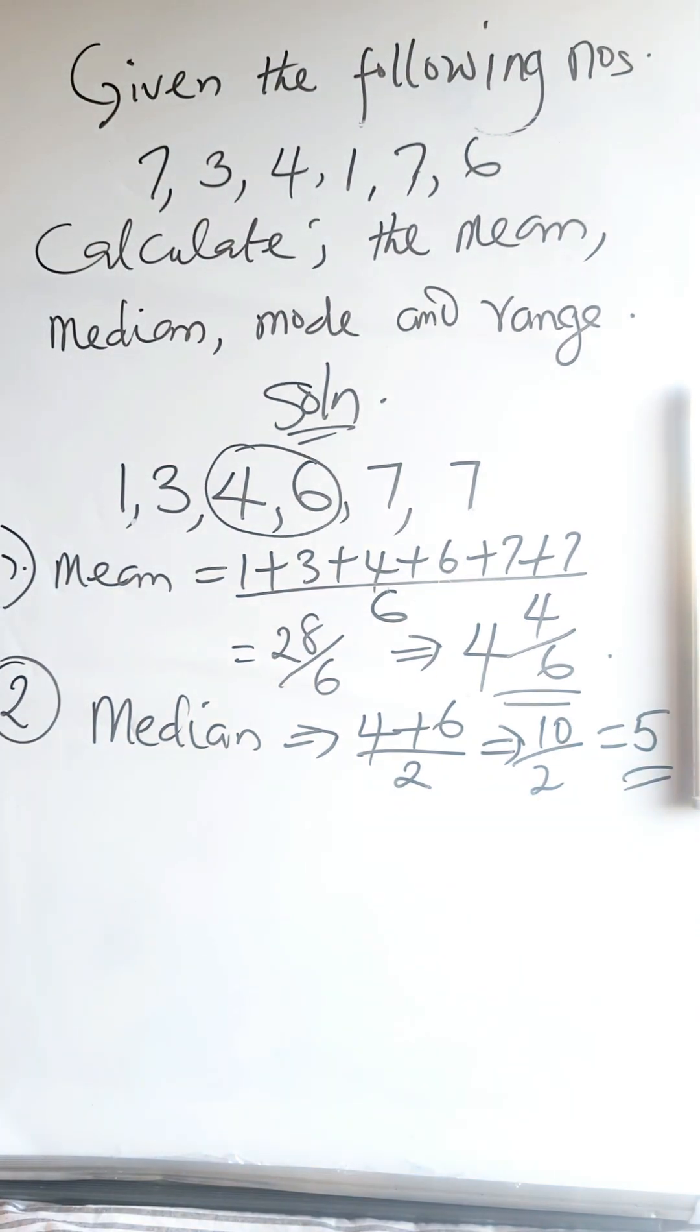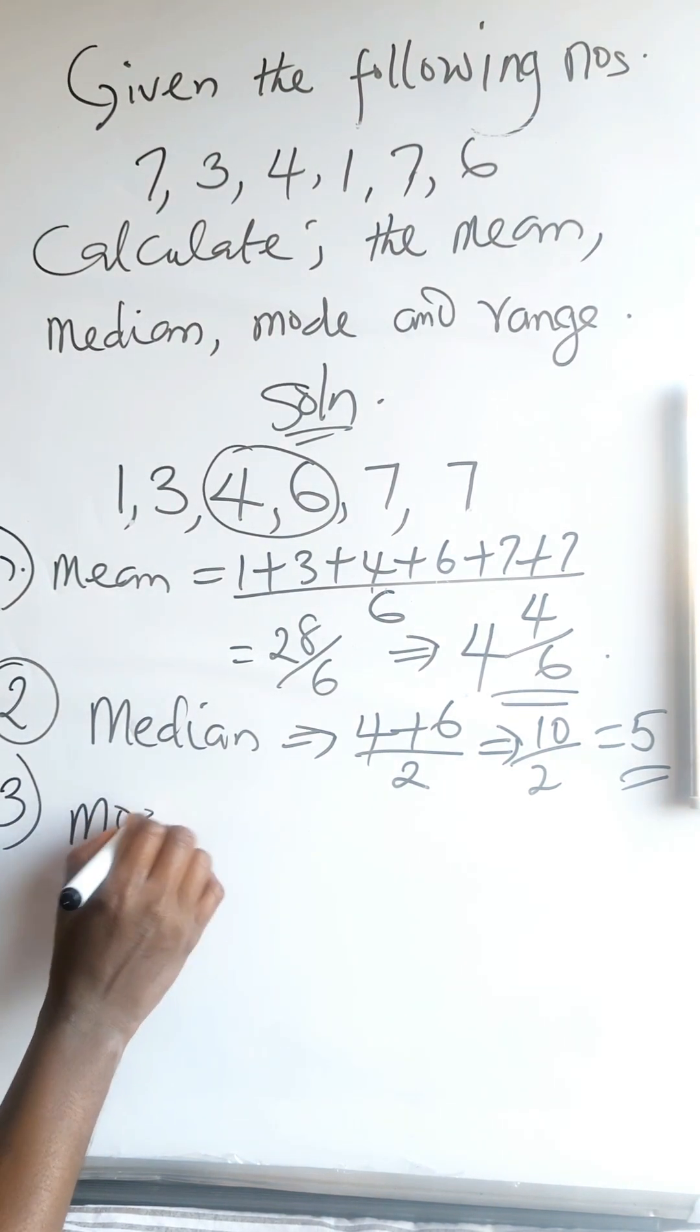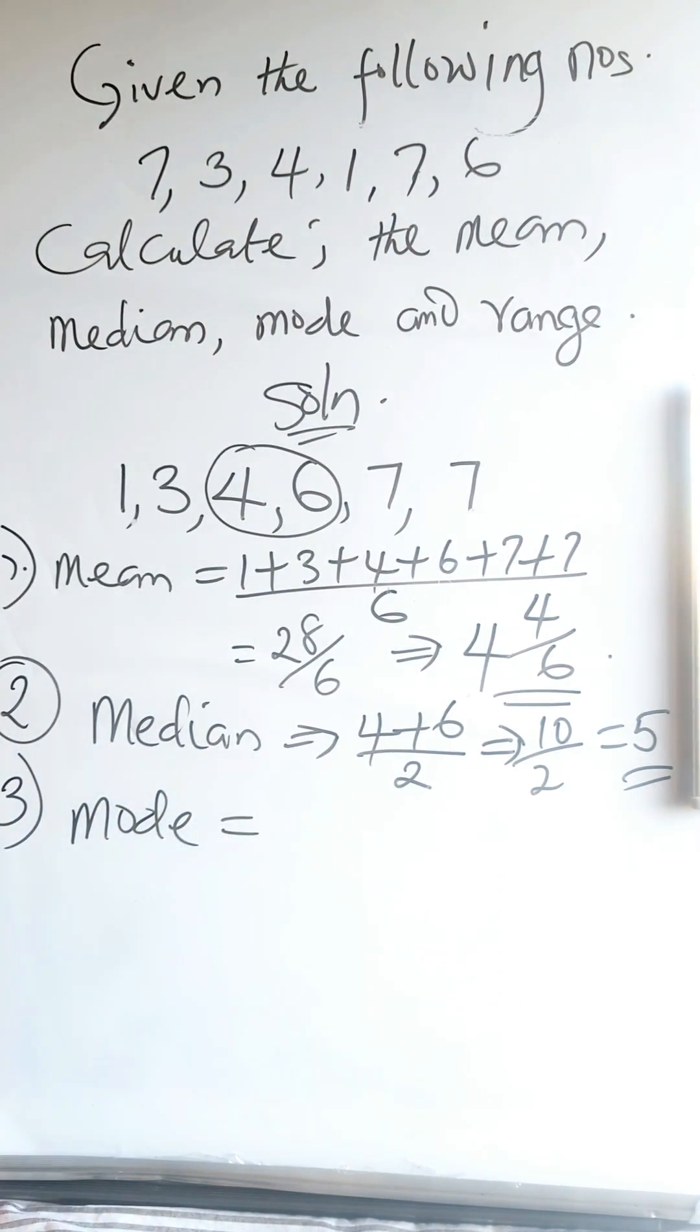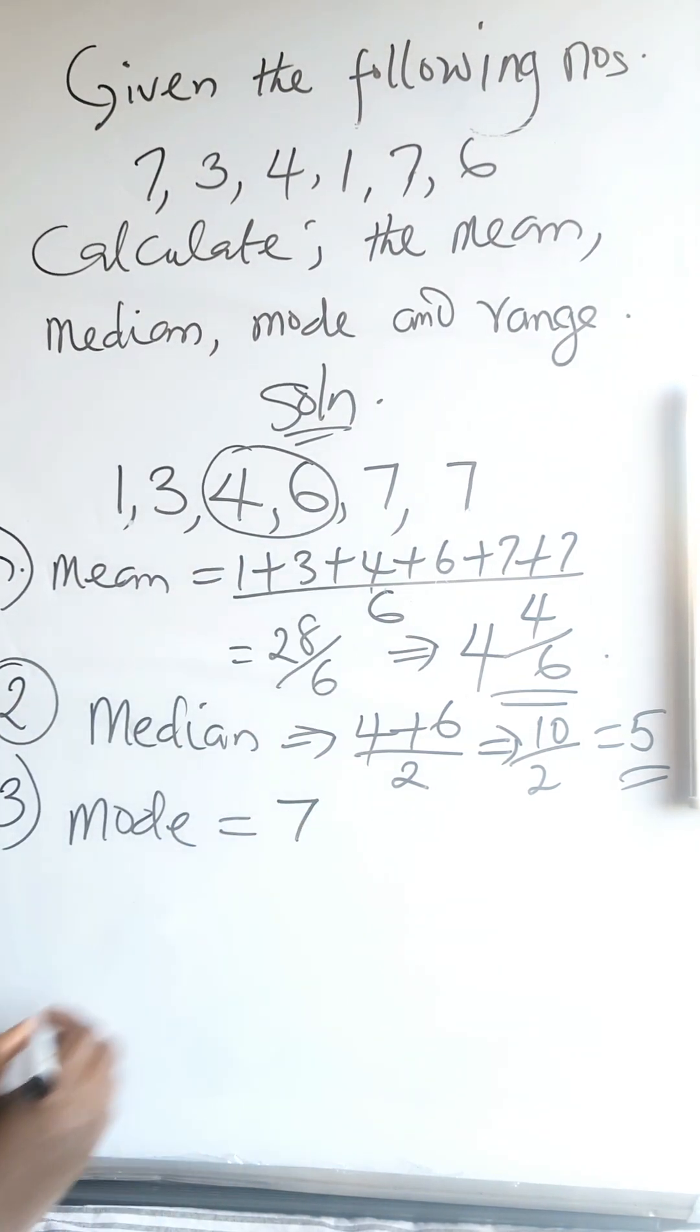So your median is 5. Then number 3 is the mode. Mode is the number with highest frequency, which means which of the numbers appear most? 7. 7 appears twice, and 7 is your mode.